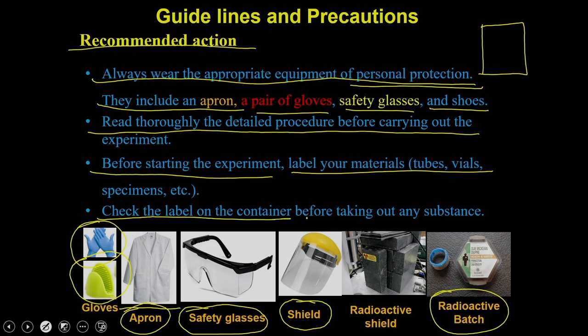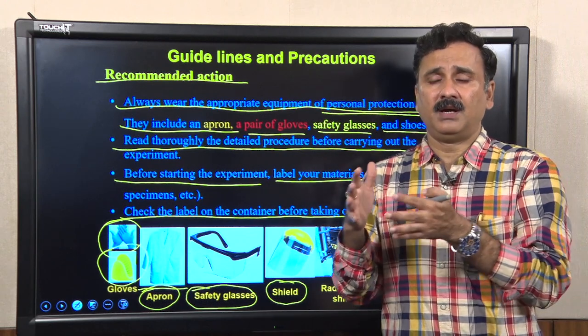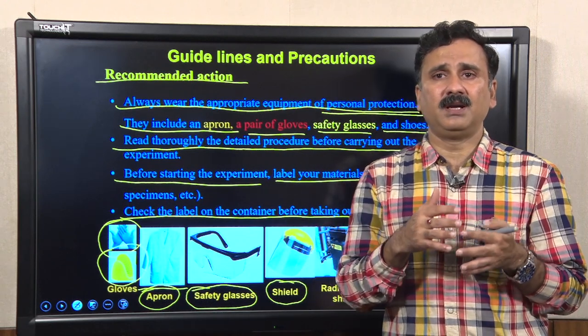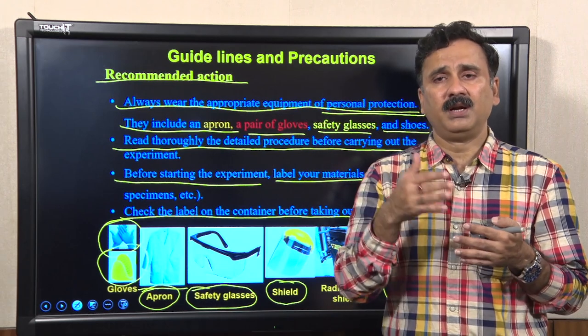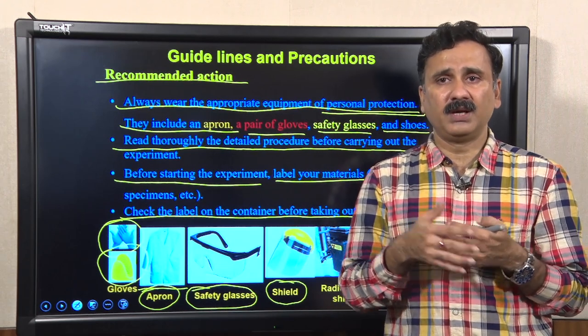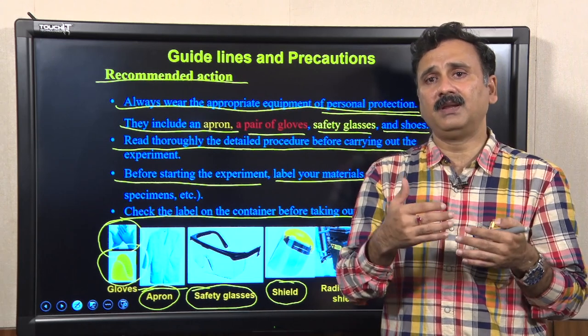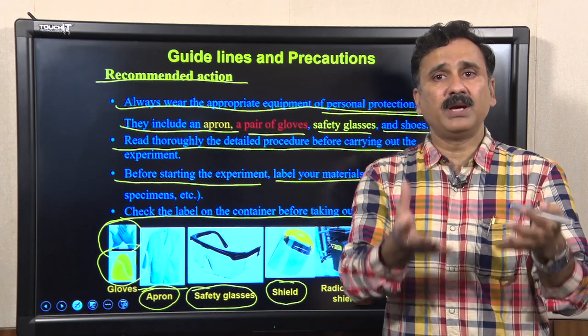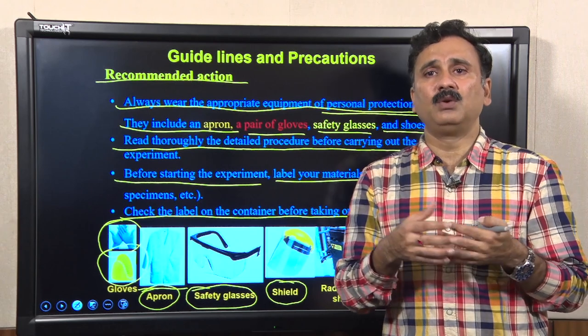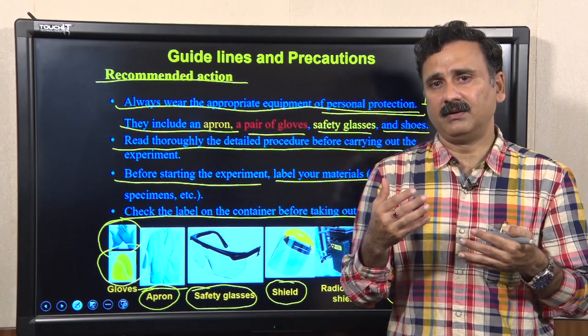You also have to check the label of the container before using a substance. If the material is hygroscopic, you have to maintain low moisture and use it carefully, then close the container. If it is a hazardous or carcinogenic material, you must take proper precautions, wear gloves, take full moisture precautions, or if it is an evaporating material like an organic solvent, take the appropriate precautions.